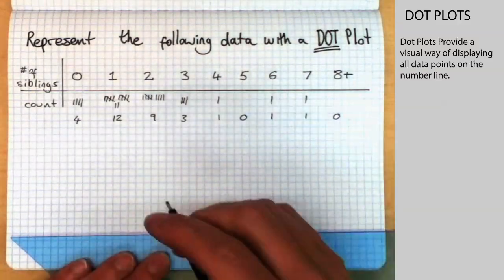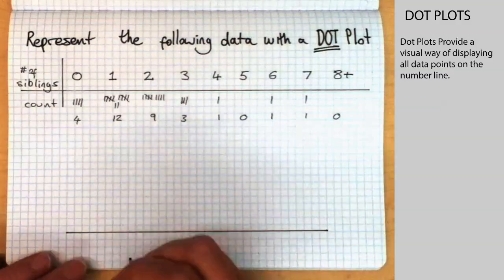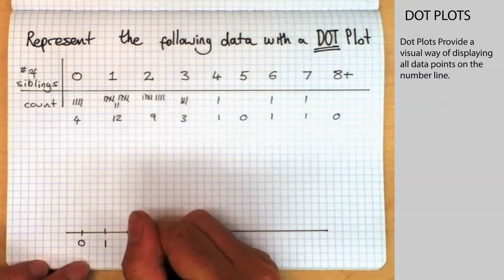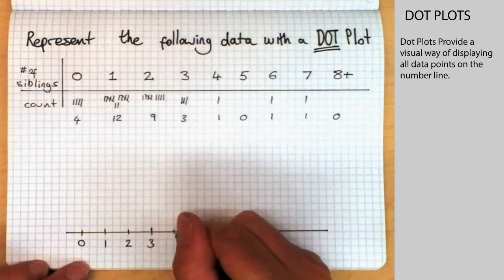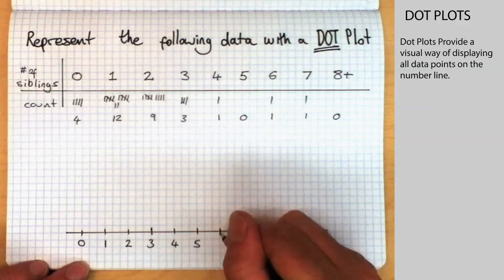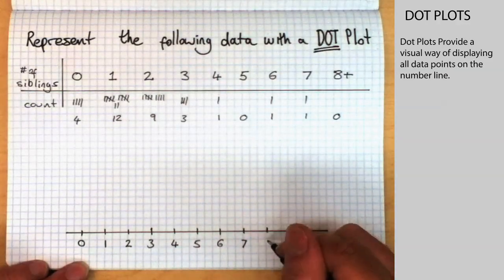We just draw our number line. We can start and end our number line wherever is sensible for the data. We're going to go from zero up to eight, even though no one has eight. We'll put that on there.